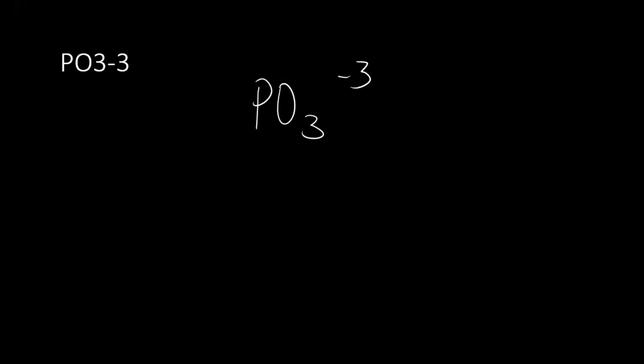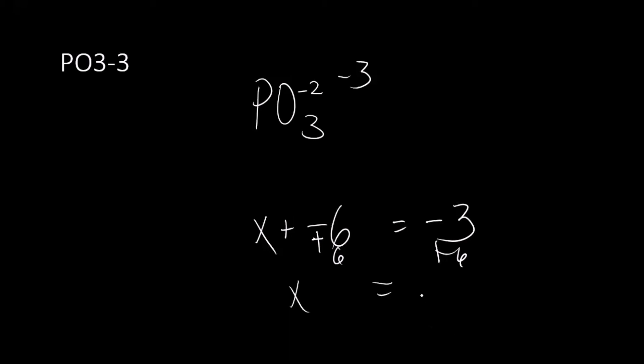One more: PO₄³⁻. It's a pizza problem - it has to equal negative three. Oxygen: 3 × (-2) = -6. Wait - it's PO₄, so 4 × (-2) = -8. Equation: X + (-8) = -3, so X = +5. Some of you may need to spend some time reviewing algebra. Y'all said it was easy - well, let's see!